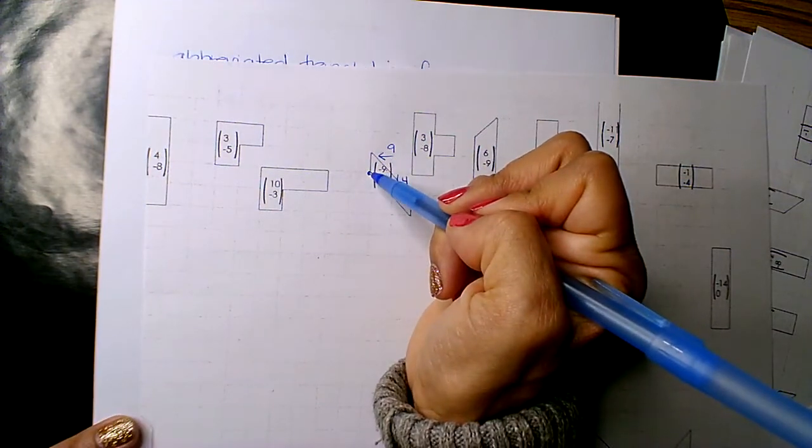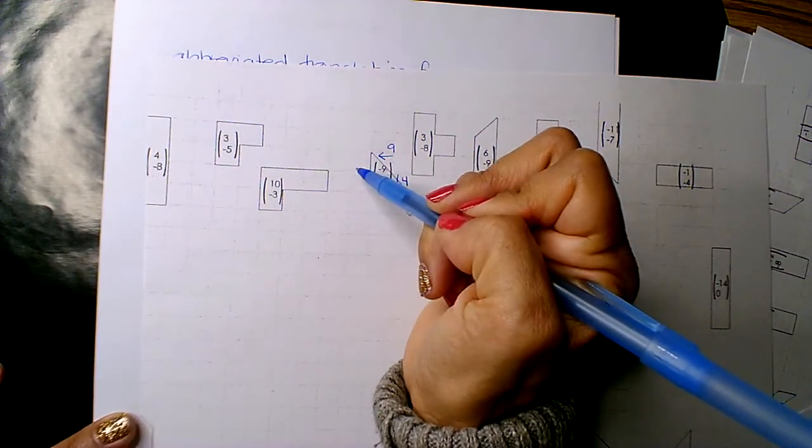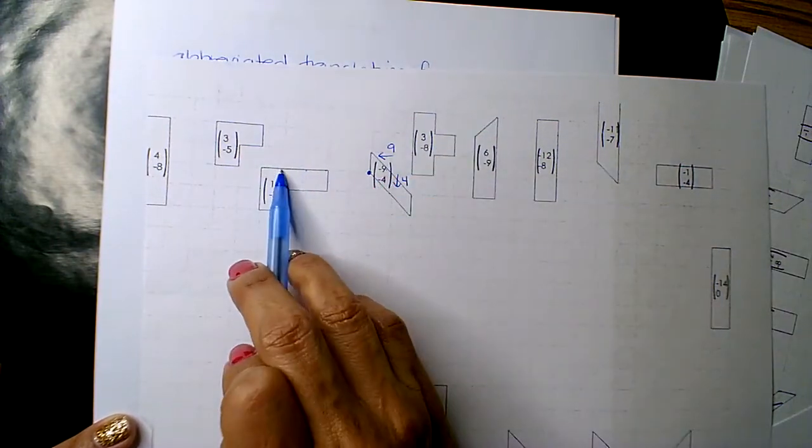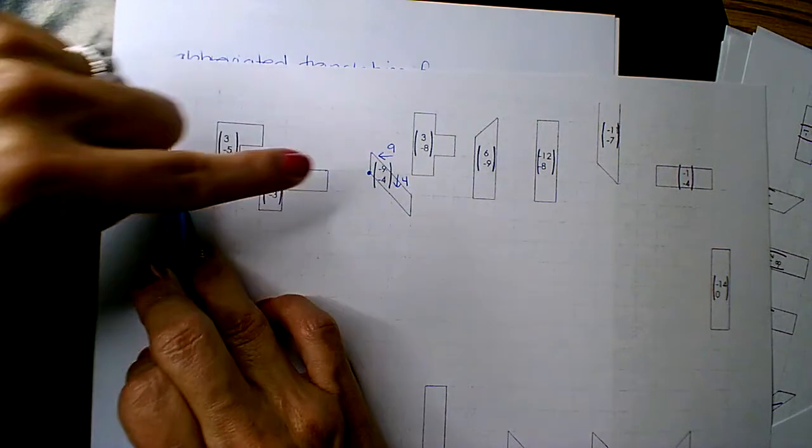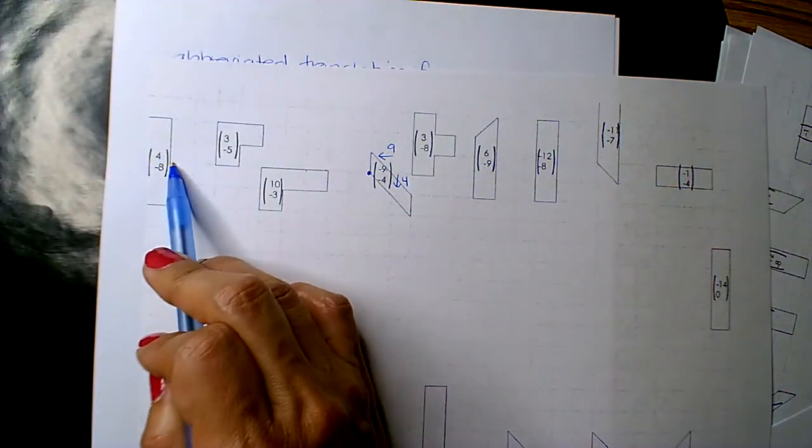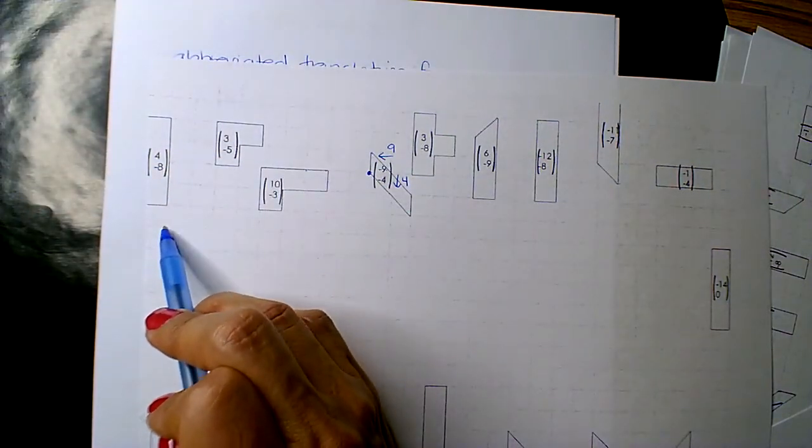So, I'm going to, from this corner, I'm going to move the top number. So, it's 1, 2, 3, 4, 5, 6, 7, 8, 9. And now, it's negative 4. So, I'm going to go down 4 units. 1, 2, 3, 4.